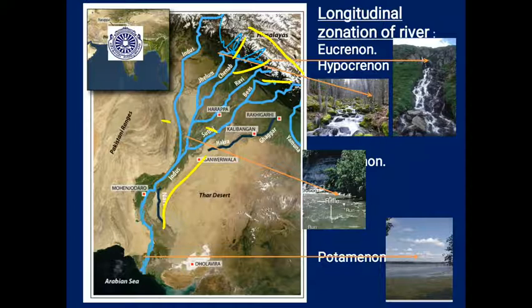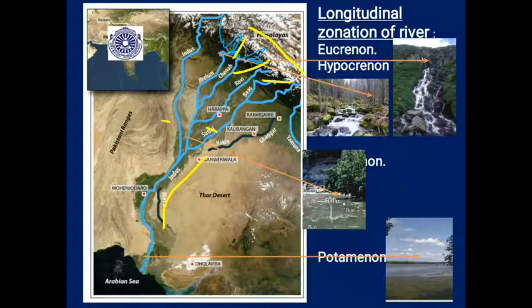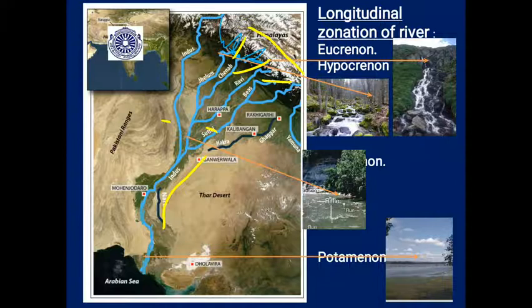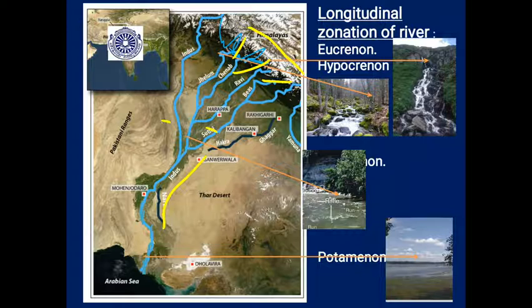Here in Shimoga, River Tunga originates in the mountains near Shringeri and flows very fast. It joins with another river, Bhadra, to form Tungabhadra at Kudli. It then flows as a large river near Hospet and later joins the Bay of Bengal near Andhra Pradesh.